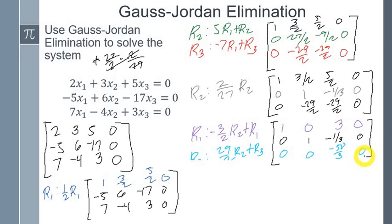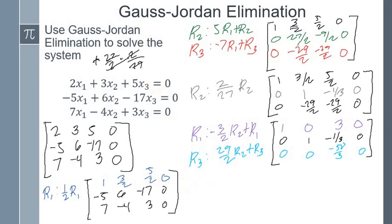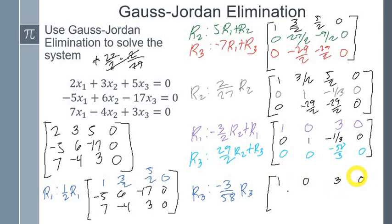Now we need to turn the leading entry of row 3 to 1. We multiply row 3 by negative 3/58, so that negative 58/3 times negative 3/58 equals 1. Copying the unaffected rows, row 3 becomes: 0, 0, 1, 0.